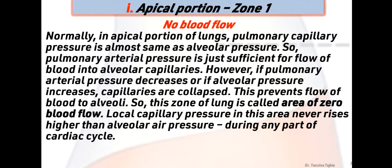Zone 1 is the apical portion where there is no blood flow. Normally, in the apical portion of the lungs, pulmonary capillary pressure is almost the same as alveolar pressure, so pulmonary arterial pressure is just sufficient for flow of blood into alveolar capillaries. However, if pulmonary arterial pressure decreases or if alveolar pressure increases, capillaries are collapsed, preventing flow of blood to the alveoli. This zone is called the area of zero blood flow, as local capillary pressure never rises higher than alveolar air pressure during any part of the cardiac cycle.